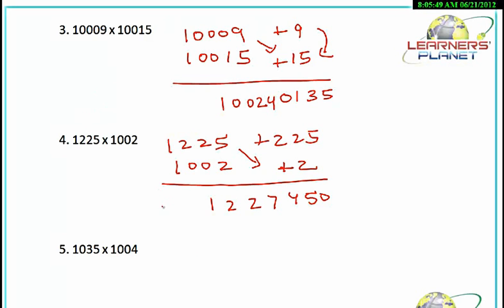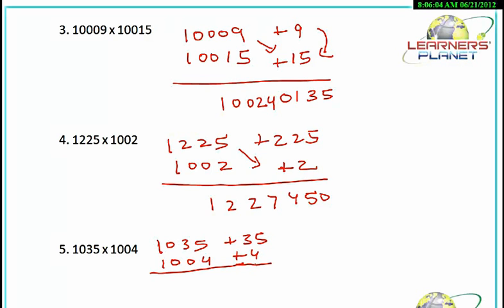Now let's multiply 1035 and 1004. It's plus 35 and plus 4. 35 into 4 is 140; with this multiplication we want three digits and we are getting them. Then 1035 plus 4 is 1039 — a very fast calculation.